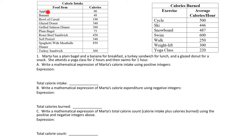On the left we have the calorie intake list and on the right we have the calories burned. For number one, Marta has a plain bagel and a banana for breakfast, a turkey sandwich for lunch, and a glazed donut for a snack. For calories burned, she attends a yoga class for two hours and swims for one hour.